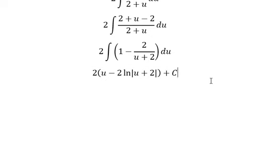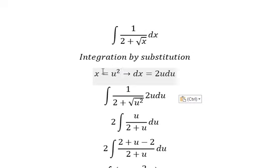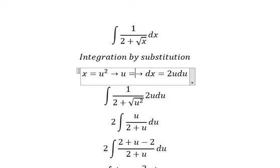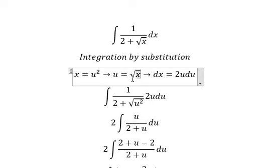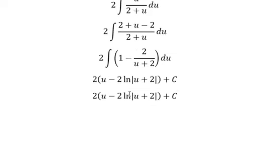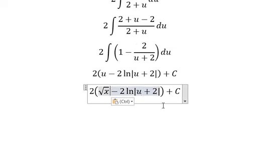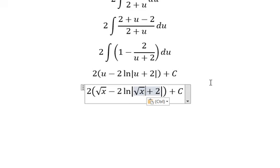This result is in terms of u. Now we substitute back, replacing u with √x to get our final answer: 2(√x minus 2 ln|√x+2|) plus C. Thank you for watching.